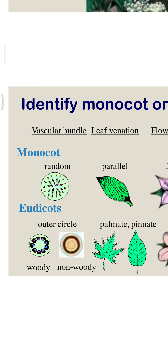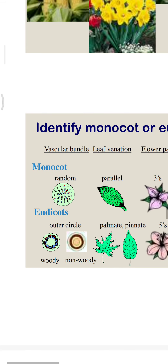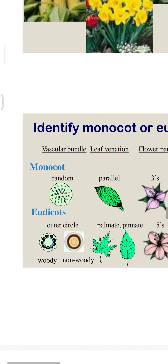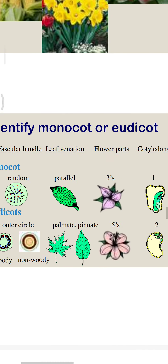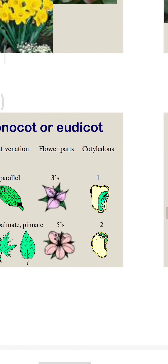See the venation. Monocots have parallel venation; dicots have palmate or pinnate venation. Flower symmetry is trimerous for monocots or pentamerous for dicots. Monocots have one cotyledon and dicots have two cotyledons.